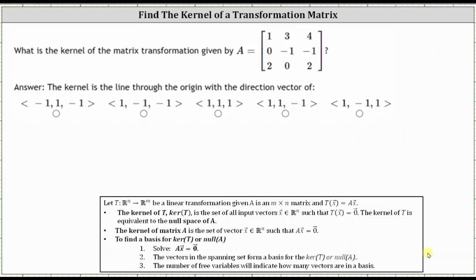What is the kernel of the matrix transformation given by matrix A? The kernel of a matrix transformation is the set of all input vectors x in R^n, or in our case, in R^3, such that T of vector x equals the zero vector.